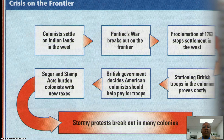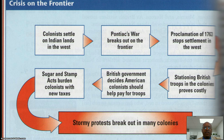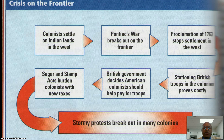Colonists moved west, encountered Native Americans, Pontiac's War broke out, and then the Proclamation of 1763 was placed because the British didn't want to defend the colonists. These taxes — the Sugar Act, the Stamp Act, and others — started to put a burden on the colonists, and we see them beginning to push back.